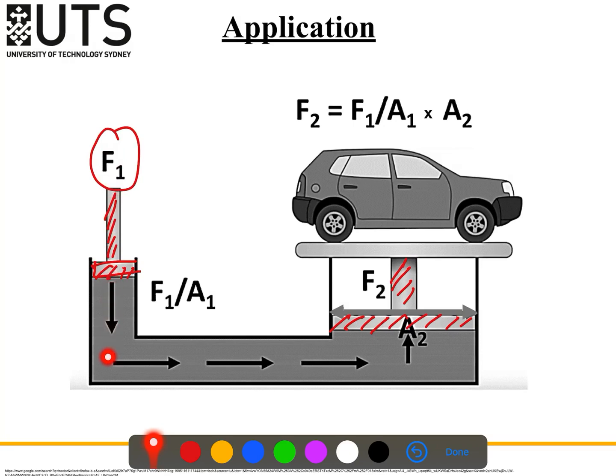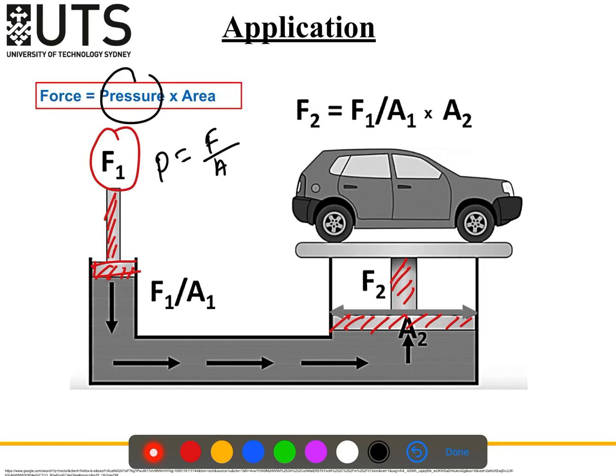What will be the pressure? We know force equals pressure times area, so pressure equals force over area. If we apply force F1 here, and the smaller piston area is A1 and the larger piston area is A2, then P1 will be F1 over A1. This F1/A1 is the pressure.